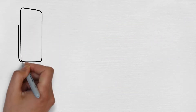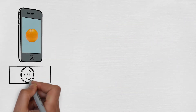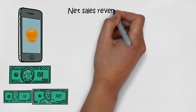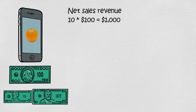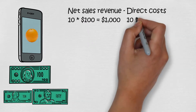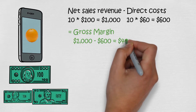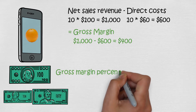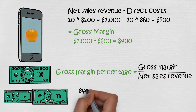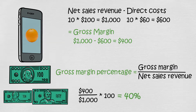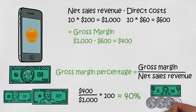Let's say our company Orange sells phones at $100 each and the direct costs are $60 each. If we sell 10 phones, our net sales revenue is $1,000 and direct costs are $600, so the gross margin is $400. The gross margin percentage is $400 divided by $1,000 equals 0.4, multiplied by 100 equals 40%. So every dollar we get from sales, we keep 40 cents.